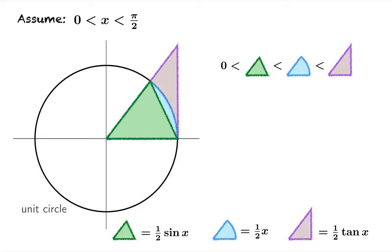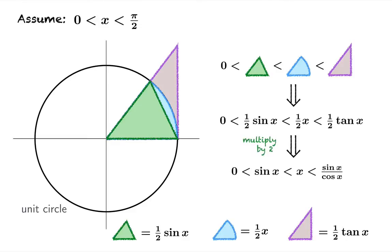And these are all greater than zero. So here you have this chain of inequalities. Now we can multiply through by two to get a new inequality and we're going to use the fact that tan x can be written as sine over cosine.